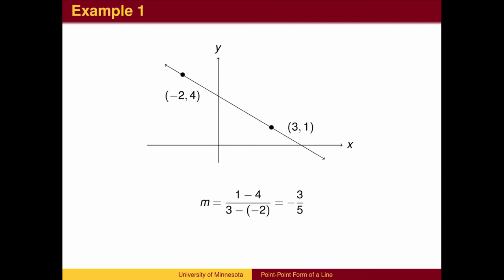Now that we know the slope of the line, we can use the point-slope form of a line to write the equation. We can use the point negative 2, 4 or we could use the point 3, 1.